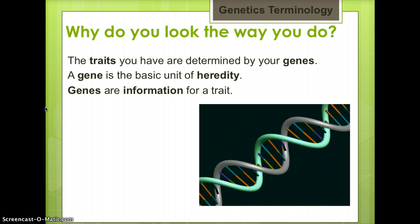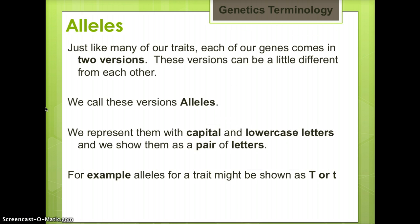Genes are information for a trait. Just like many of our traits, each of our genes comes in two versions. These versions can be a little different from each other. We call these versions alleles. We represent them with capital and lowercase letters, and we show them as a pair of letters. For example, alleles for a trait might be shown as capital T or lowercase t.